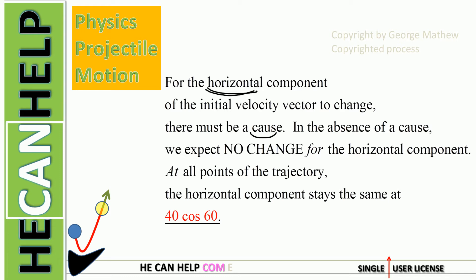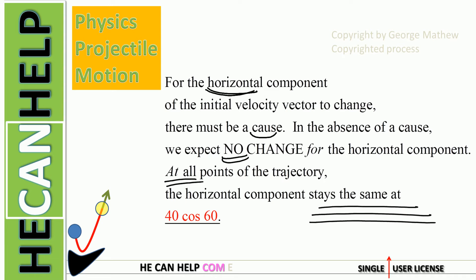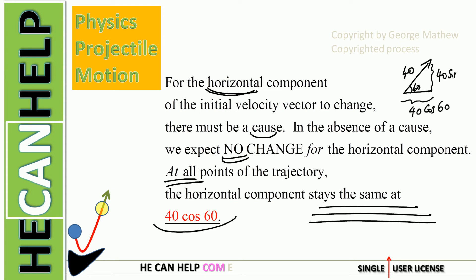In the absence of a cause, we expect no change for the horizontal component. At all points of the trajectory, the horizontal component stays the same at 40 cosine 60. The horizontal component is 40 cosine 60, and the vertical component is 40 sine 60.